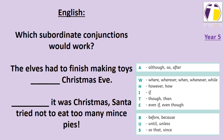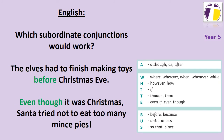Here I have two sentences that are missing subordinating conjunctions. Have a think to yourself about which one you think fits well in these sentences. 'The elves had to finish making toys, [something] Christmas Eve.' '[Something] it was Christmas, Santa tried not to eat too many mince pies.' Here are the ones that I chose: 'The elves had to finish making toys before Christmas Eve.' 'Even though it was Christmas, Santa tried not to eat too many mince pies.'